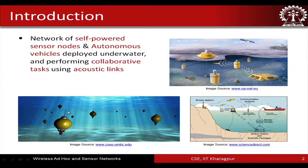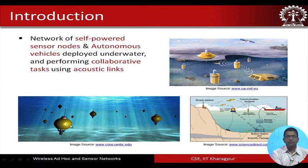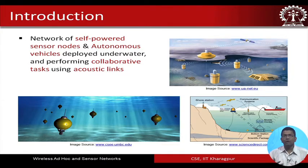Each node senses certain underwater phenomena around it, and similarly the other nodes do the same. As in terrestrial sensor networks, a multi-hop kind of mechanism is implemented. Through a multi-hop path, data is sent to the surface station, which collects the data for analysis to understand what phenomena are occurring underneath and around the water surface.